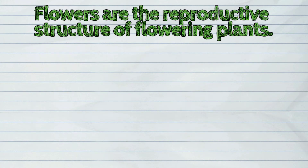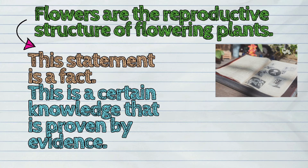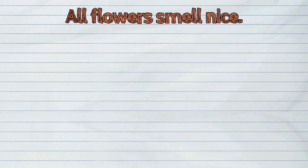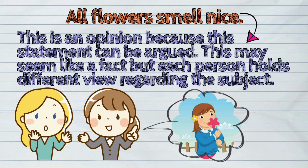Next, flowers are the reproductive structure of flowering plants. This statement is a fact — this is certain knowledge that is proven by evidence. Lastly, all flowers smell nice. This is an opinion because this statement can be argued. This may seem like a fact, but each person holds a different view regarding the subject.